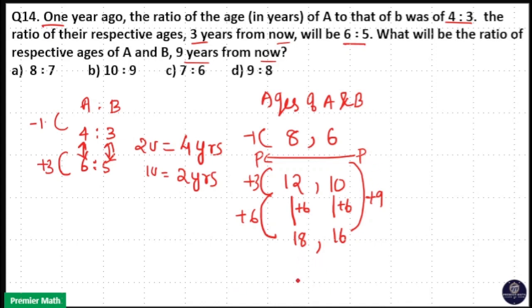That is the ratio will be 2 into 9 is equal to 18, 2 into 8 is equal to 16. So the ratio of ages will be 9 is to 8. So option D is your answer.